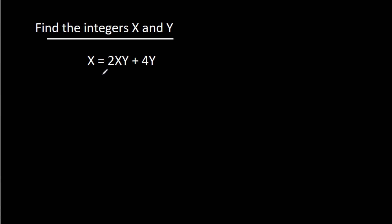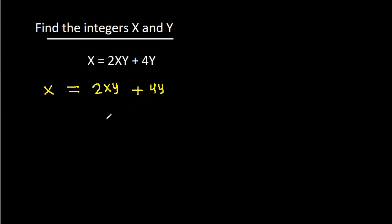In this video, we have been given that x is equal to 2xy minus 4y. We have to find the integers x and y. So we have x is equal to 2xy minus 4y.